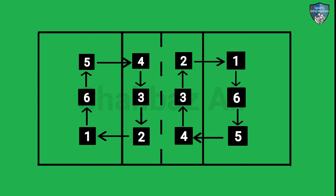When the receiving team has gained the right to serve, its players rotate one position clockwise. The player in position two rotates to position one to serve. The player in position one rotates to position six.